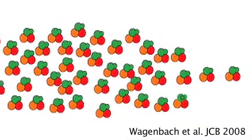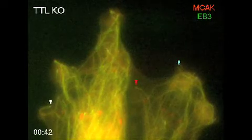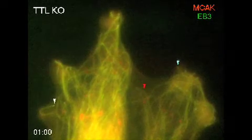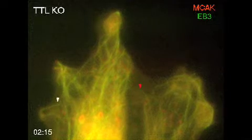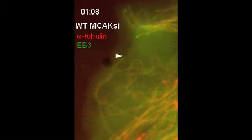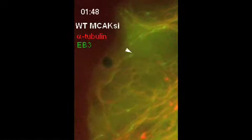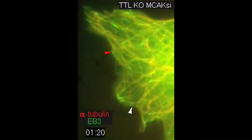The answer seems to involve microtubule depolymerizing motor proteins, such as MCAK. When Paris transfected MCAK into TTL knockout fibroblasts, the de-tyrosinated microtubules disassembled much quicker after contacting the membrane. And when she knocked down MCAK with siRNAs, the microtubule dynamics of both wild-type and TTL knockout cells were much slower and became indistinguishable from one another.